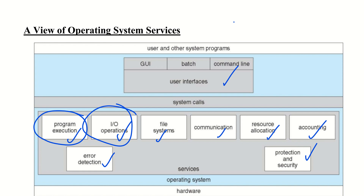Next is I/O operation. A running program may require I/O operations to be performed, which may involve a file or an I/O device. For example, a program may take input from the keyboard and display output on the screen. The running program may require I/O — that is the I/O operation service.